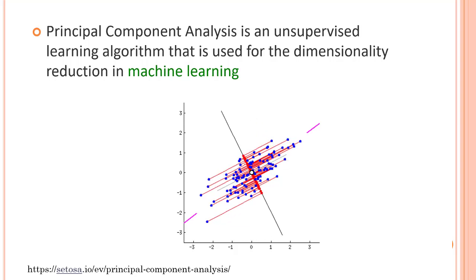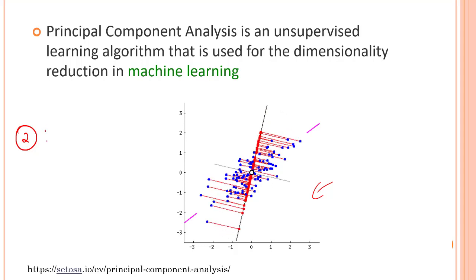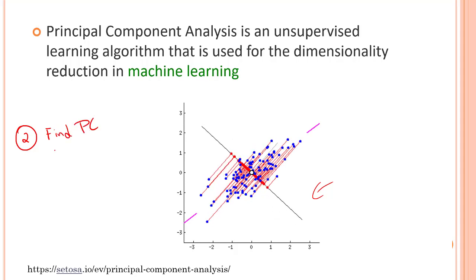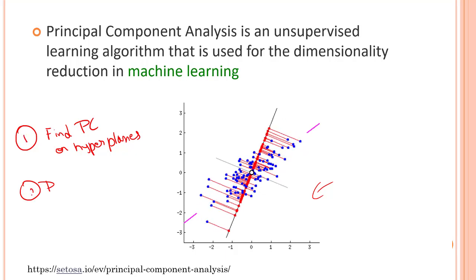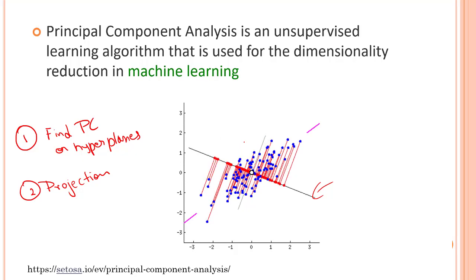This straight line is the axis. These are the data points. We are projecting onto this axis. This black point is my axis. We can have different axes. Just to simplify PCA, there are only two steps: find the PC or the hyperplanes, and second is projections.